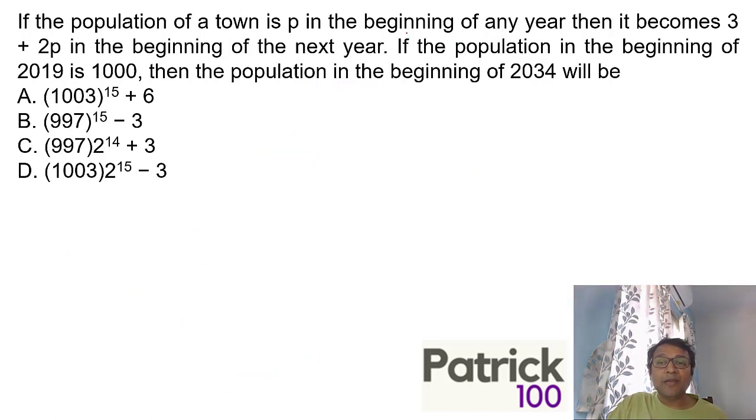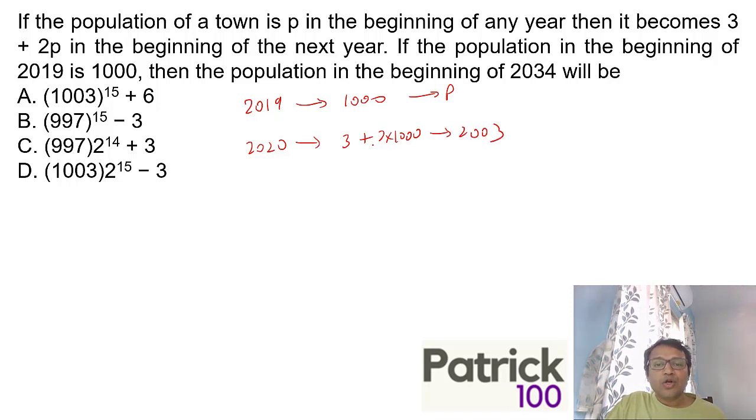If the population of a town is P in the beginning of any year, it becomes 3 + 2P in the beginning of the next year. If the population in the beginning of 2019 is 1000, in 2020 the population will be 3 + 2 × 1000 = 2003. I cannot go up to 2034 because numbers are increasing drastically, so I can't calculate. But I'm sure there is a pattern. Let me figure out the pattern first and use the options as far as possible.